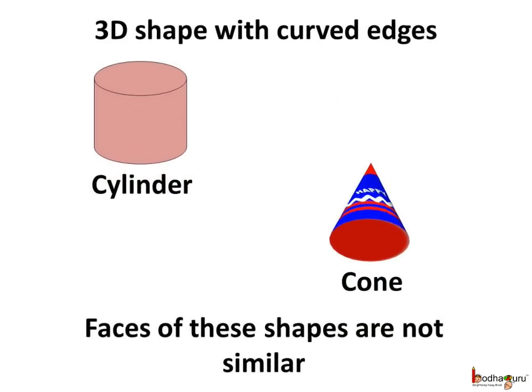Certain 3D shapes have curved edges, like the cylinder or the cone. If you notice, not all the faces are similar in both of these. A cylinder has 3 faces, out of which two are circular faces. And coming to the cone, one of the faces is circular. So in some shapes the faces are not similar.